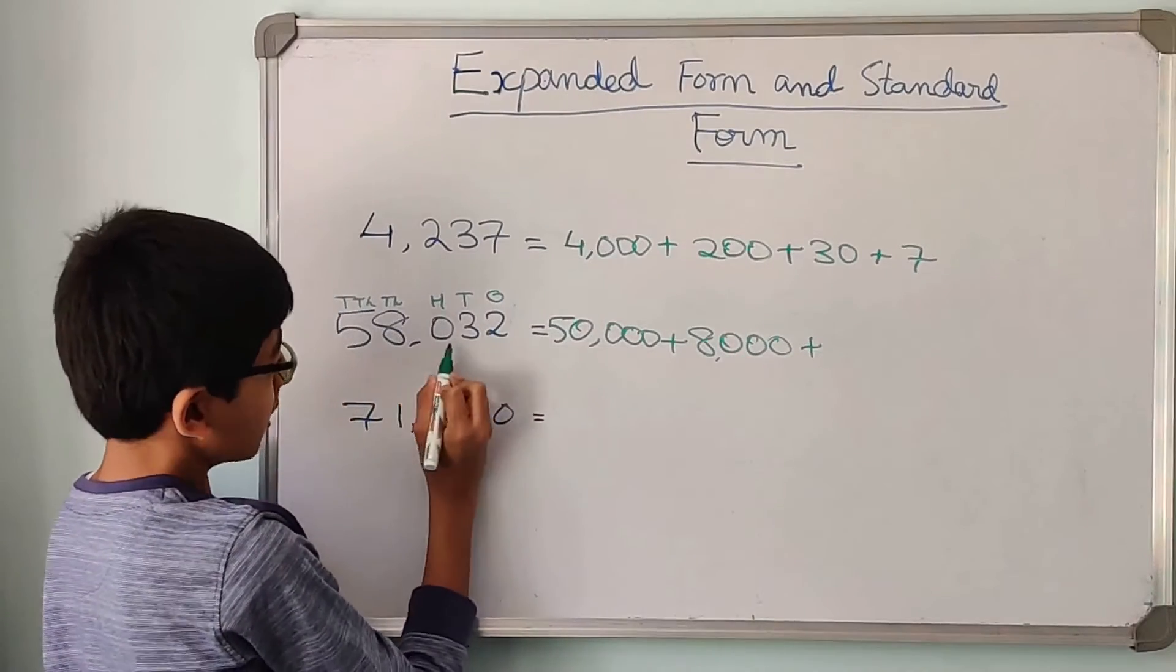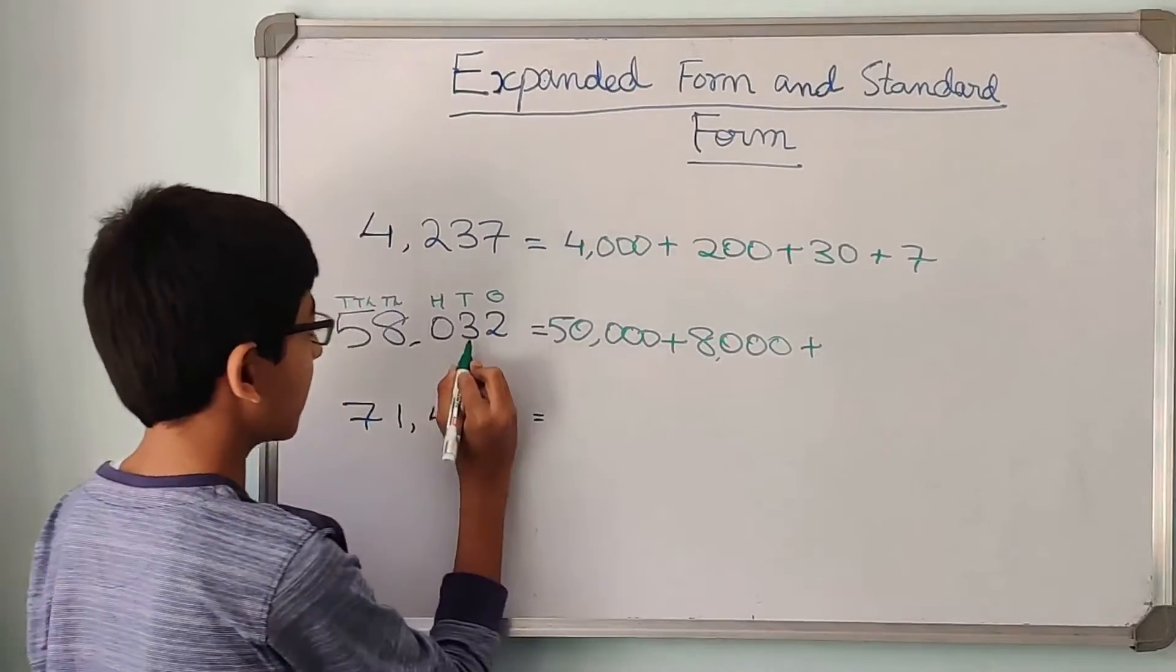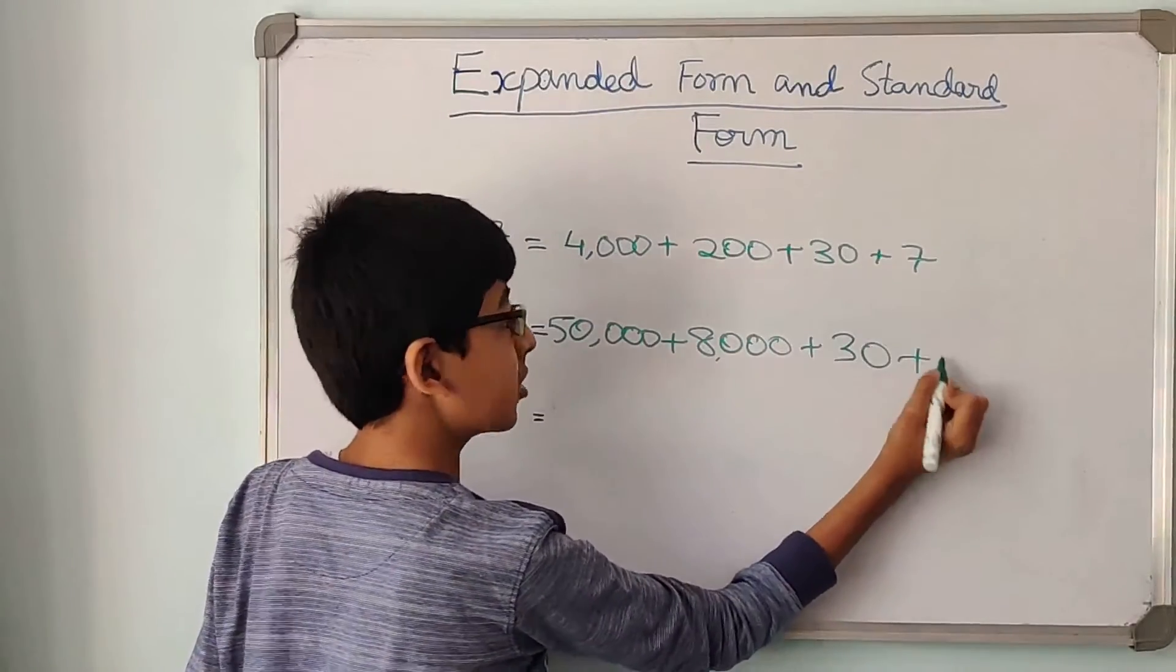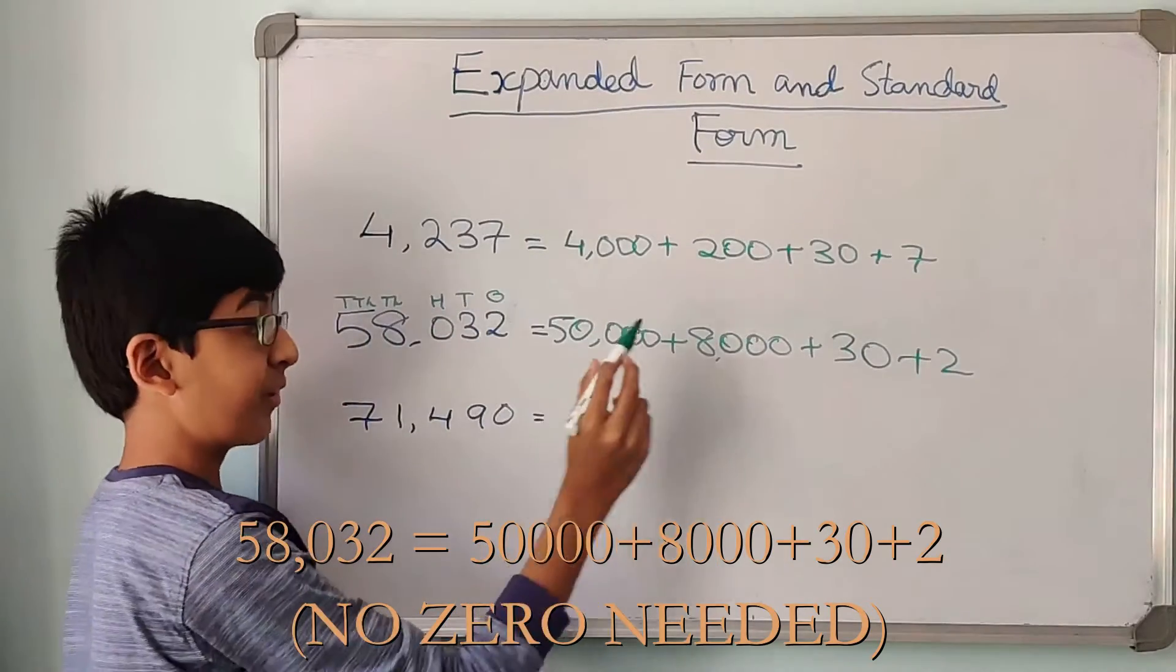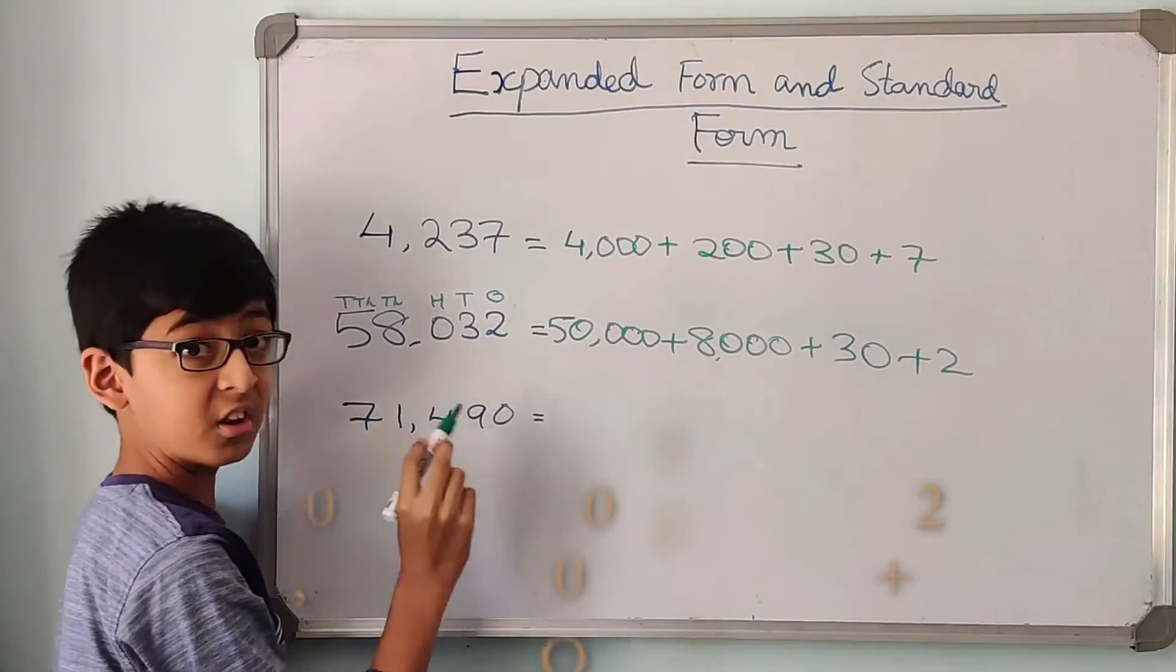Plus 0, but 0 is not needed. So let us move on to the next number. That is 30 plus 2. So now this is 50,000 plus 8,000 plus 30 plus 2. That makes 58,032.